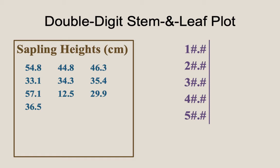So the first digit would replace the first hash mark, and the second digit would replace the next. Here we have entered 4, 8 in the last row of the plot to represent the value 54.8 centimeters. Next, we enter 4, 8 in the 40s row for 44.8 centimeters, and then 6, 3 in that row for the next value of 46.3 centimeters.